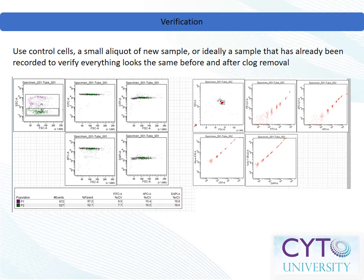As with any assay, reproducibility is key. This too is true for procedures as unglamorous as clog removal. To this end, it is important to verify that the instrument has not changed in any way as a result of your intervention. Ideally, you can rerun a sample that was successfully run before the clog occurred, but in the absence of such a sample, control cells such as glutaraldehyde-fixed chicken red blood cells, leftover compensation control samples, or even quality control beads can be used to verify the instrument's performance. In a pinch, you might elect to run an aliquot of a new sample to verify that the clog has indeed been removed and your instrument is performing as expected.